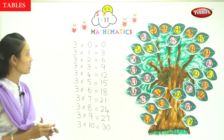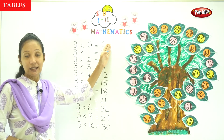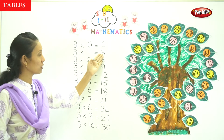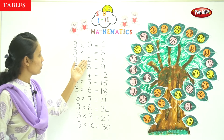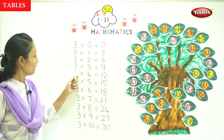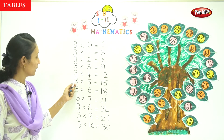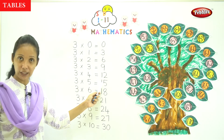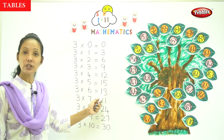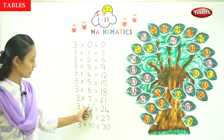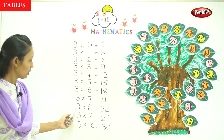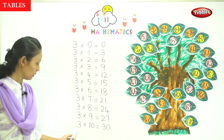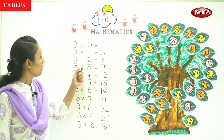Okay, so once more: 3 into 0 is equal to 0. 3 into 1 is equal to 3. 3 into 2 is equal to 6. 3 into 3 is equal to 9. 3 into 4 is equal to 12. 3 into 5 is equal to 15. 3 into 6 is equal to 18. 3 into 7 is equal to 21. 3 into 8 is equal to 24. 3 into 9 is equal to 27. 3 into 10 is equal to 30.